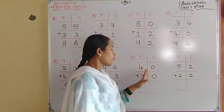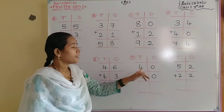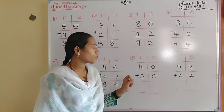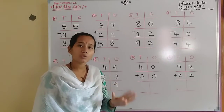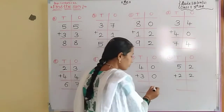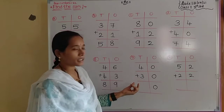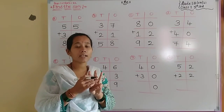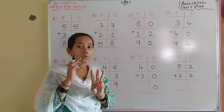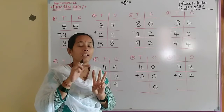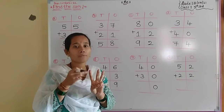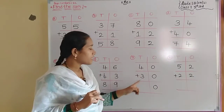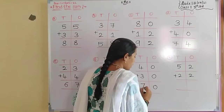Next problem: 40 plus 30. In the ones placement: 0 plus 0 equals 0. Note: 0 plus 0 is equal to 0. Then tens placement: 4 plus 3. Take 4 in your mind, raise 3 fingers. Do not count 4 again — count the next number after 4: 5, 6, 7. So 7 is the sum of 4 and 3, and 40 plus 30 equals 70.